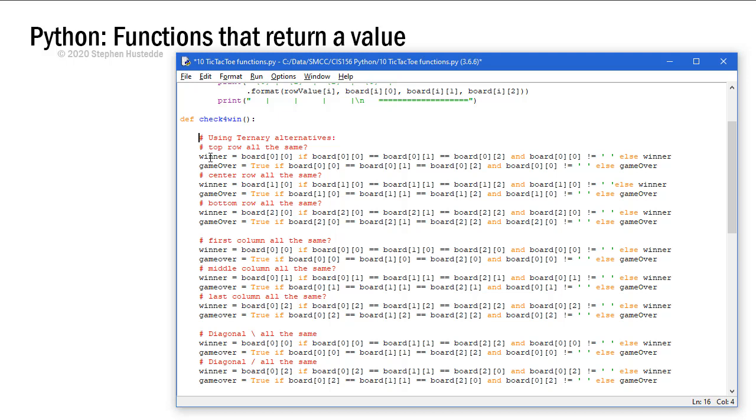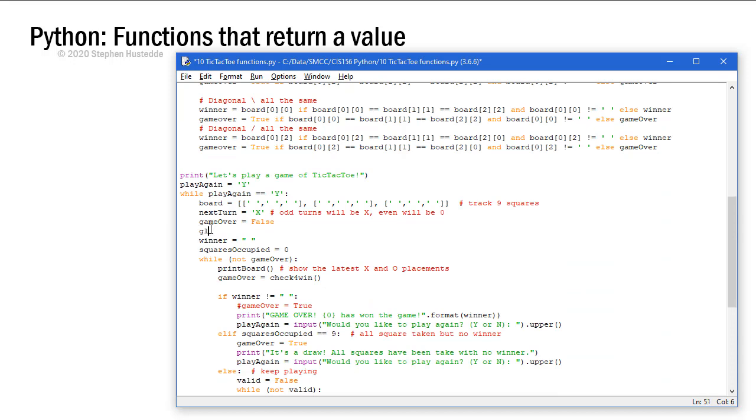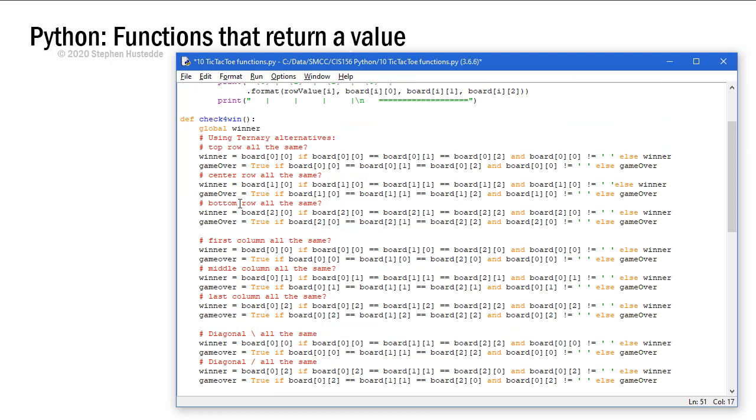I'm going to dedent. Now I have the variable winner. I want to make that a global variable. So I'm going to reference winner as a global, and I need to come down and do the same thing in my while loop, and we'll say global winner. So now I'm free to change the value of winner to either an X or O if any of these are true.